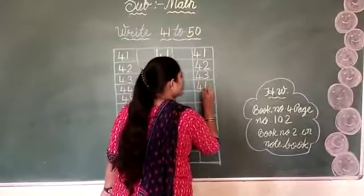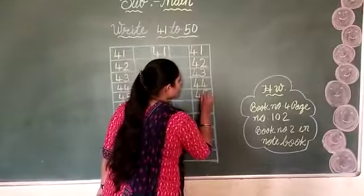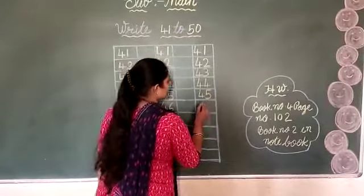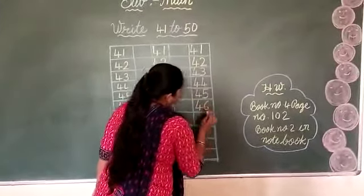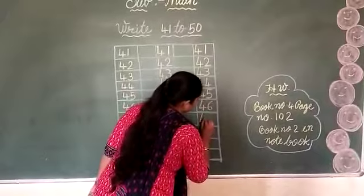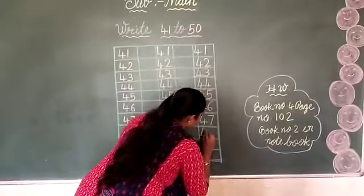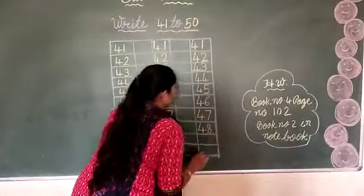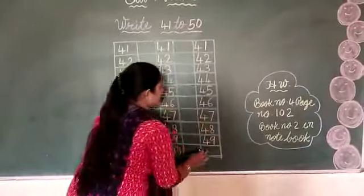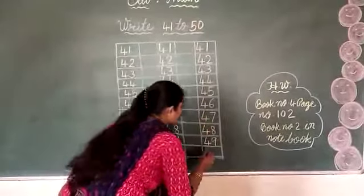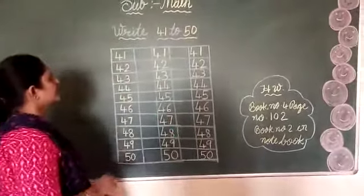Write 44, 45, 45. Say and write kids. Next, 4, 6, 46. Next box, 47, 47. After that, 48, 48. Then 49, 49. And last, 5, 0, 50. What did we teach today?